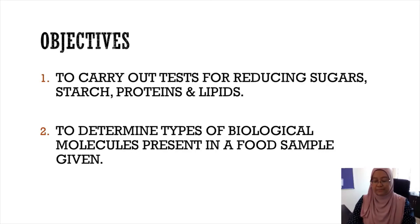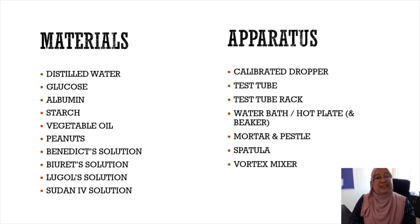These are the materials and apparatus that will be used in Experiment 1. Materials are: distilled water, glucose, albumin, starch, vegetable oil, peanuts, Benedict solution, Biuret solution, Lugol's solution, and Sudan IV solution. For the apparatus: calibrated dropper, test tube, test tube rack, water bath or hot plate, mortar and pestle, spatula, and vortex mixer.